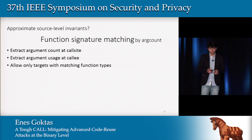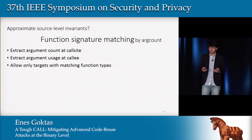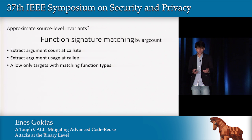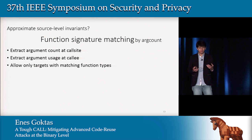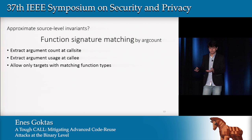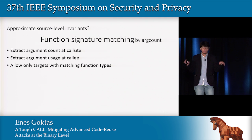How do we approximate the source-level accuracy? What do we extract from the binaries? We perform function signature matching by extracting argument counts at the indirect call sites and the functions. At the indirect call sites, we do some analysis and look for arguments being prepared, and we use that as the invariant. We do a similar thing at the functions where we look at arguments being used. Once we have this information, we mark the indirect call sites and functions with the argument count and then perform some matching.